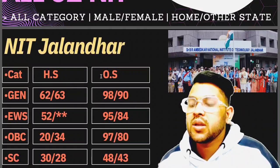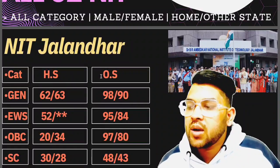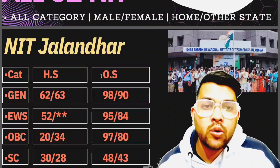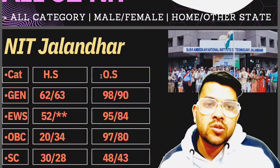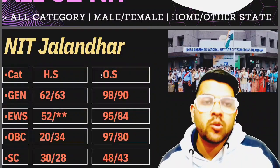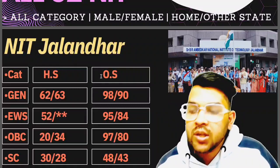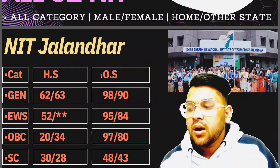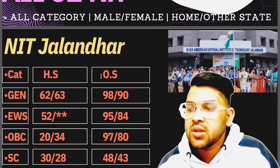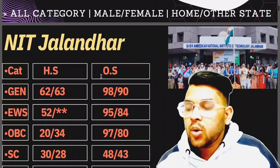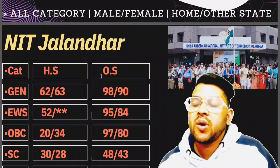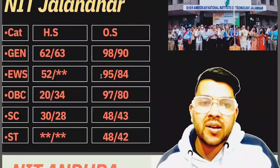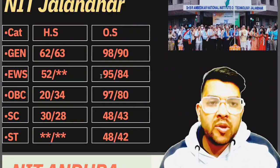For OBC it is 20 and 34 — you can't imagine that at just 20 marks a student can get NIT, but it is possible if you are from home state. It is also lower than SC candidate, which is quite exceptional — you will see this in the NIT cutoff list. For ST, 48 and 42 marks for other state.